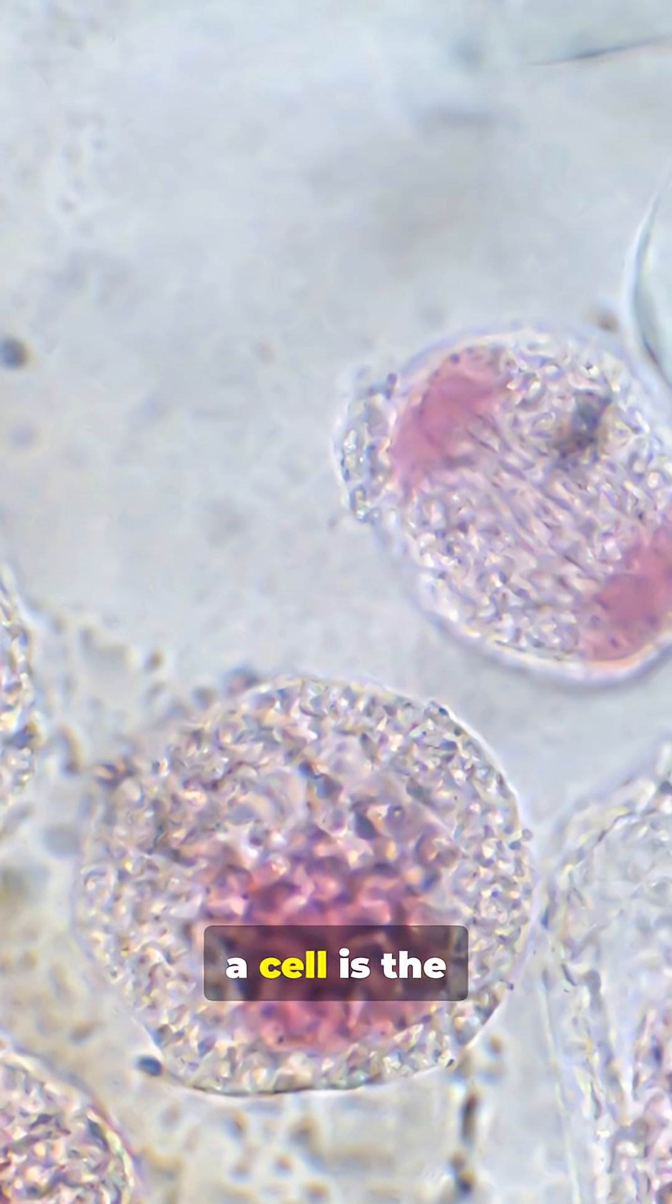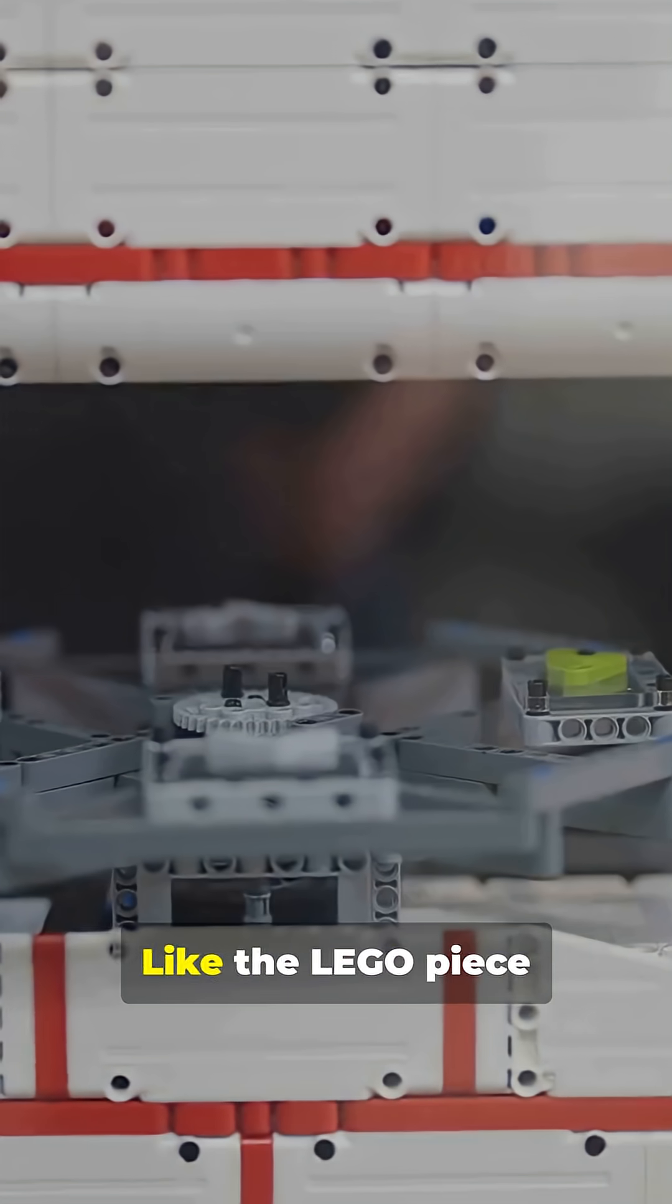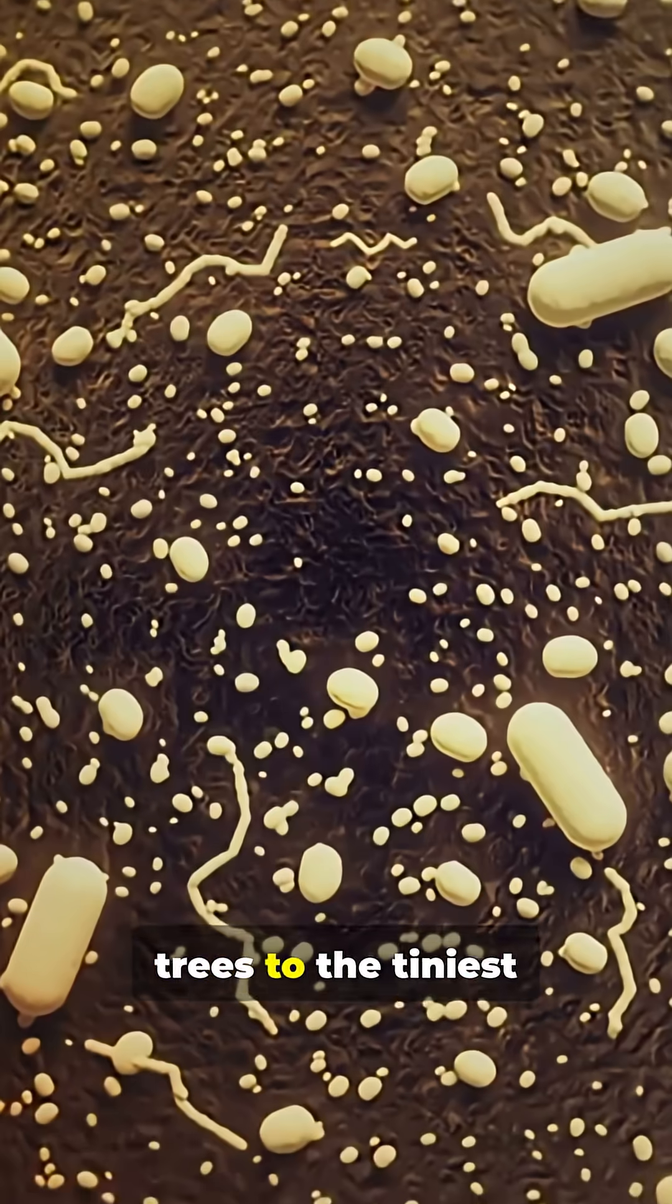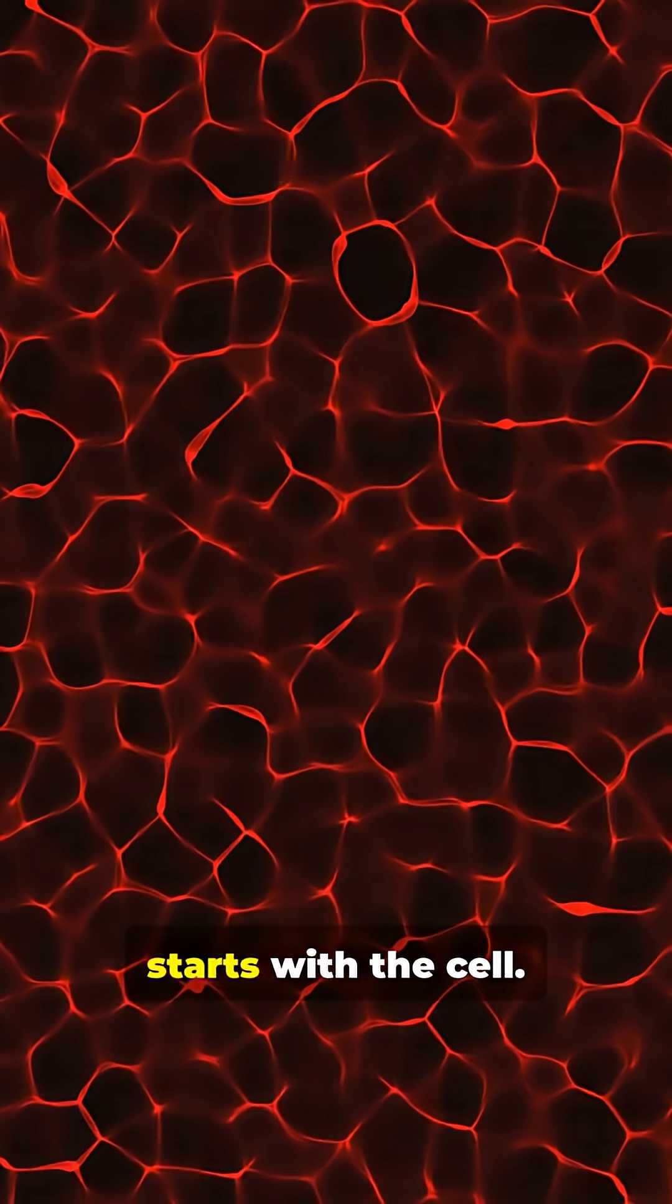Let's break down why cells rule our world. First off, a cell is the smallest unit of life. Think of it as the ultimate building block, like the Lego piece that makes up every living thing. From the tallest trees to the tiniest bacteria, it all starts with the cell.